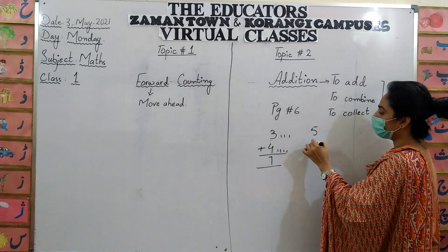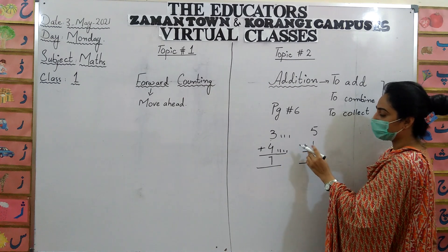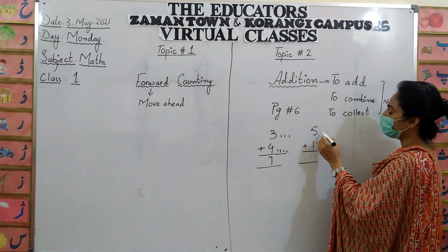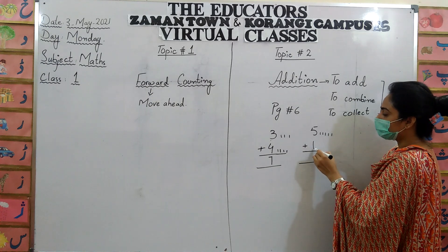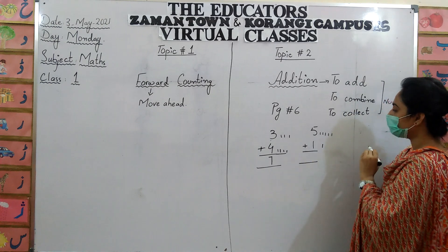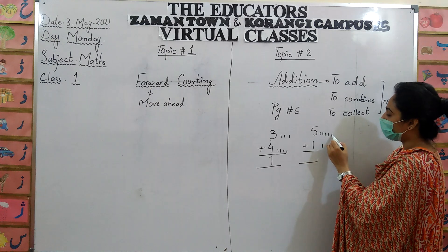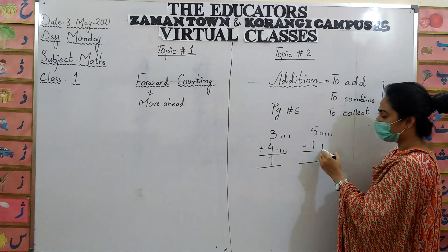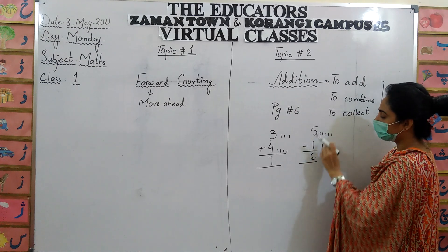Now do practice with one more question: five plus one. What is this sign? This is the sign of addition. Draw five lines with me: one, two, three, four, five. And there is only one number, so we will draw only one line. Now count the lines with me: one, two, three, four, five, and this one line makes six. Five and one: six. Answer is six. Five plus one equals six.